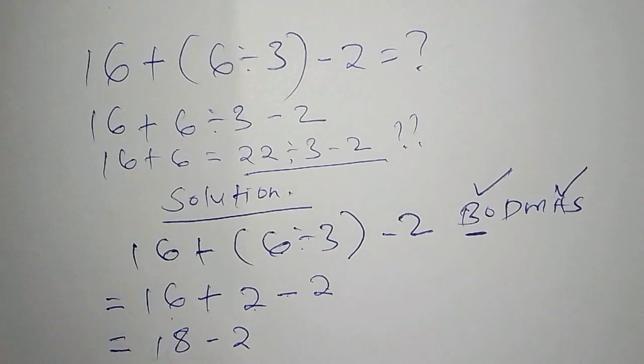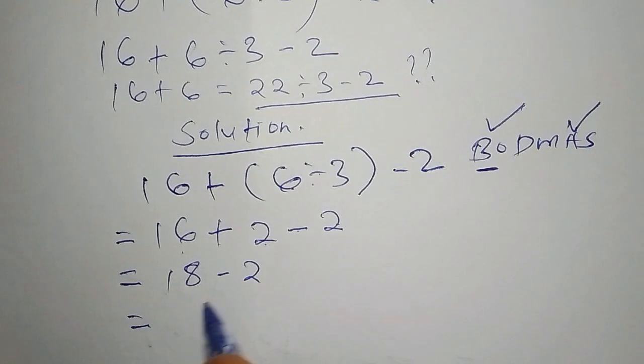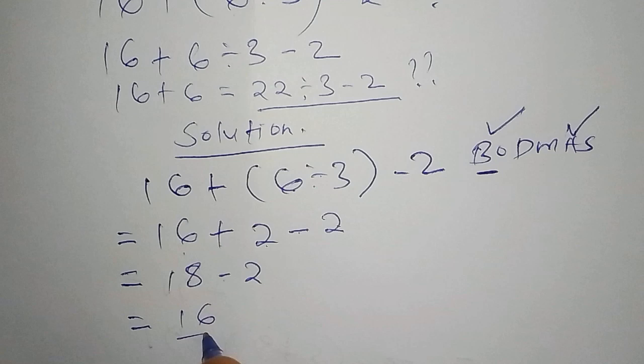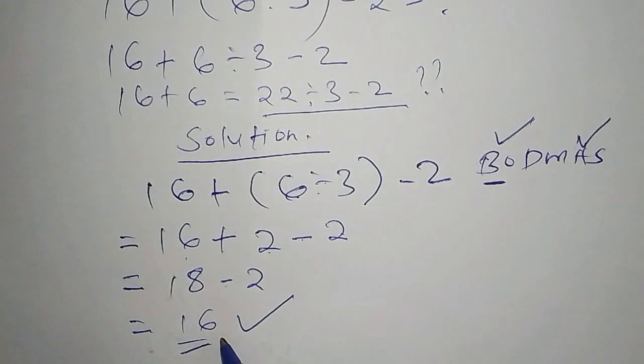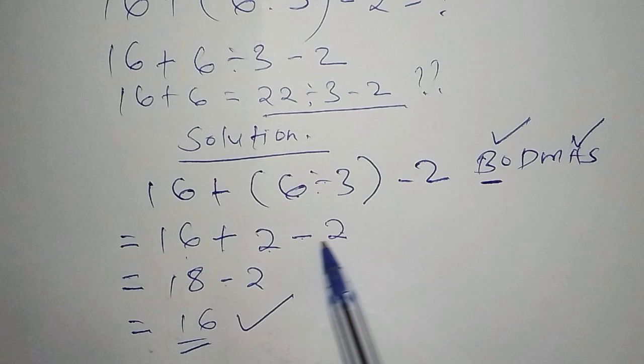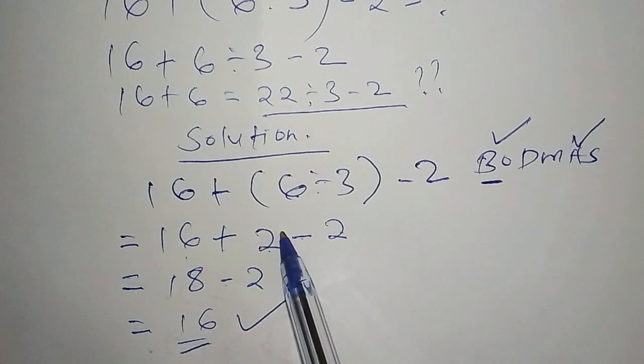You must follow the steps when working it out. So our final answer becomes 18 - 2 and our answer is 16. This is the correct answer with the best method and procedure.